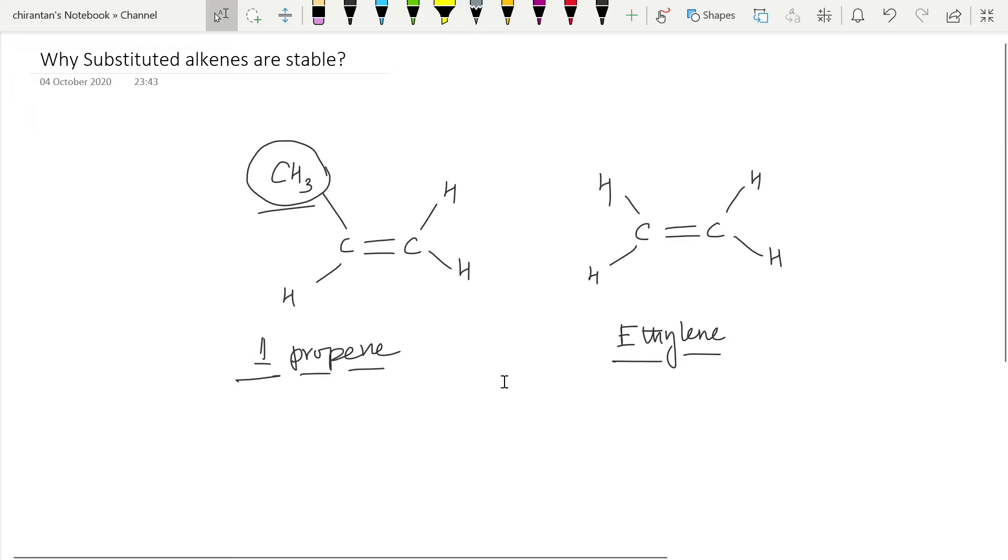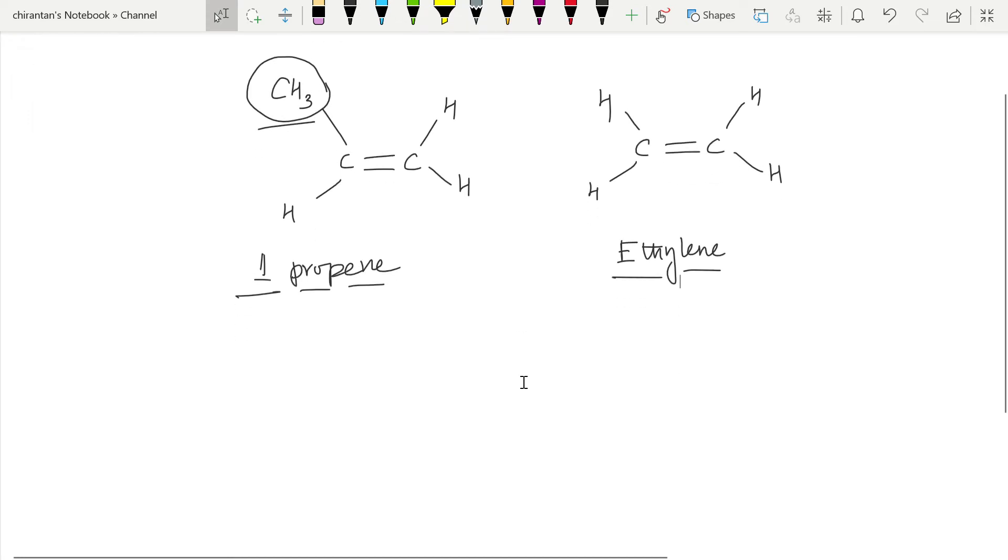If we check the structure of these two alkenes, we can see there is only one difference between them. In propene we have this methyl group, and in ethylene we do not have such methyl groups - only hydrogens are connected to these two carbon atoms. Now if I draw the structure of propene...